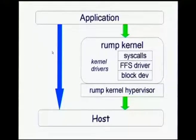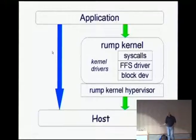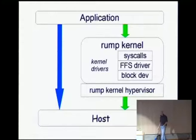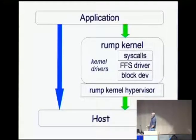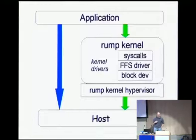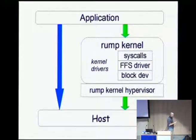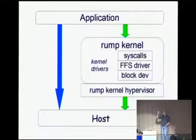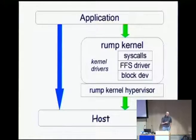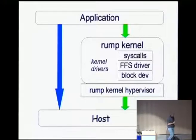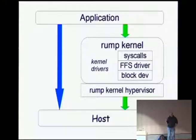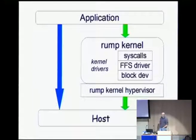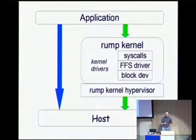Now I'll explain what happened. This is a picture of what was going on. This entire screen represents one process. We have the application layer on top — that's the source code I showed you, which decided to bootstrap the rump kernel, mount the file system, read the file system contents, and so forth.